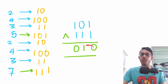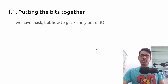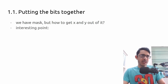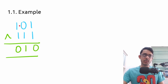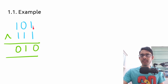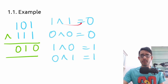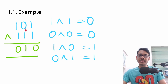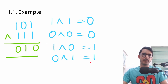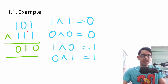We have the XOR mask with us, but the question is how do we get x and y out of it. One interesting point to note is that only the differences between x and y are shown. In the case of five and seven — represented as one zero one and one one one — only the disagreements between bits show up as ones in the XOR result. Whenever two numbers agree on a bit, both being one-one or zero-zero, the XOR gives zero. Whenever there is a disagreement — zero and one, or one and zero — the result is one. These differences look interesting, even if we don't know exactly what to do with them yet.